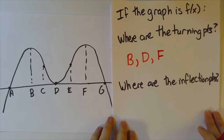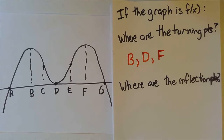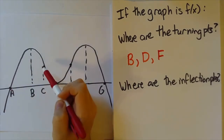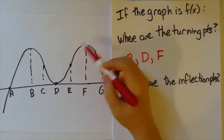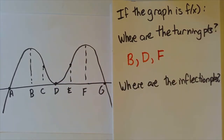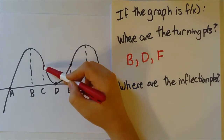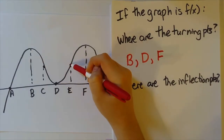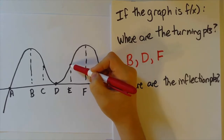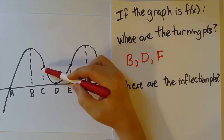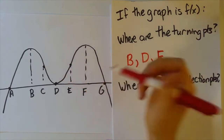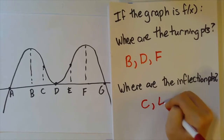The next question is, where are the inflection points? That is where the function changes concavity. Over here the function is concave down, but then it changes to be concave up, and then it changes to be concave down. So the inflection points are the places where it changes from concave down to concave up, and then from concave up back to concave down. Those are at c and e.